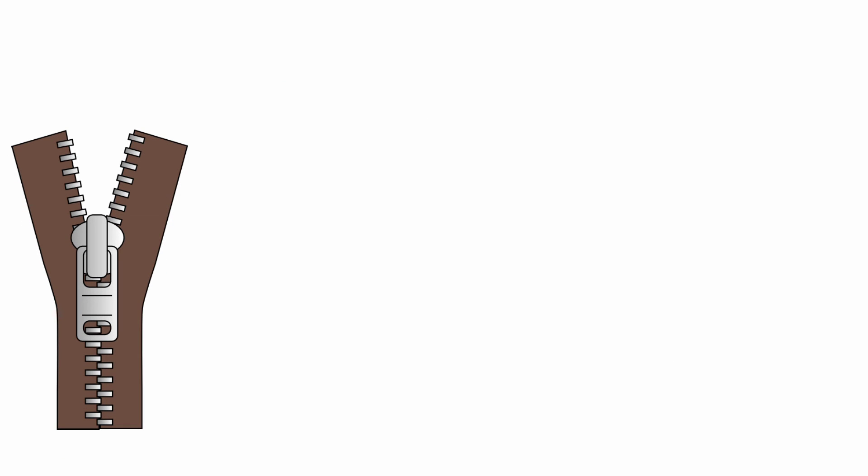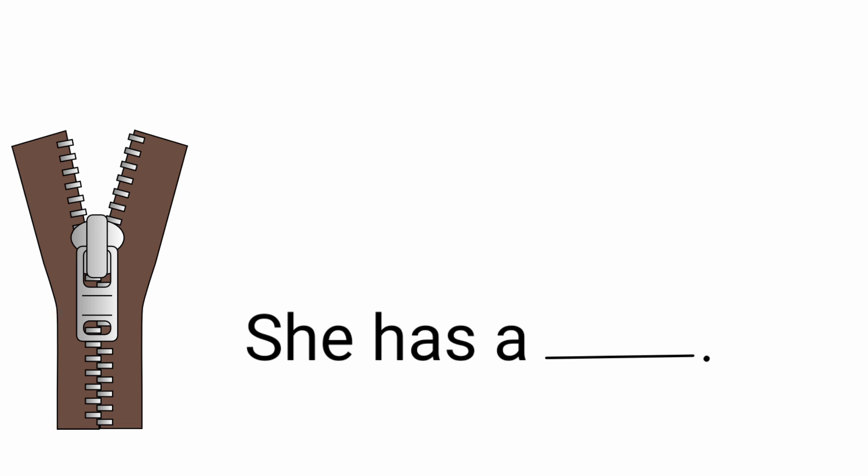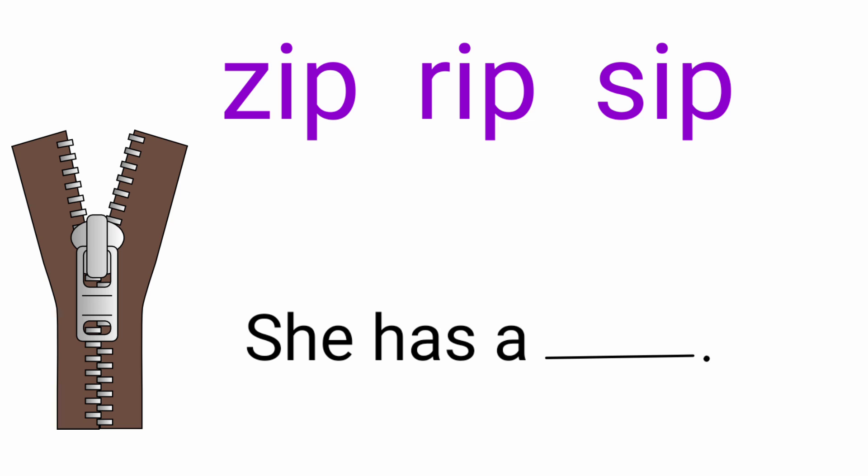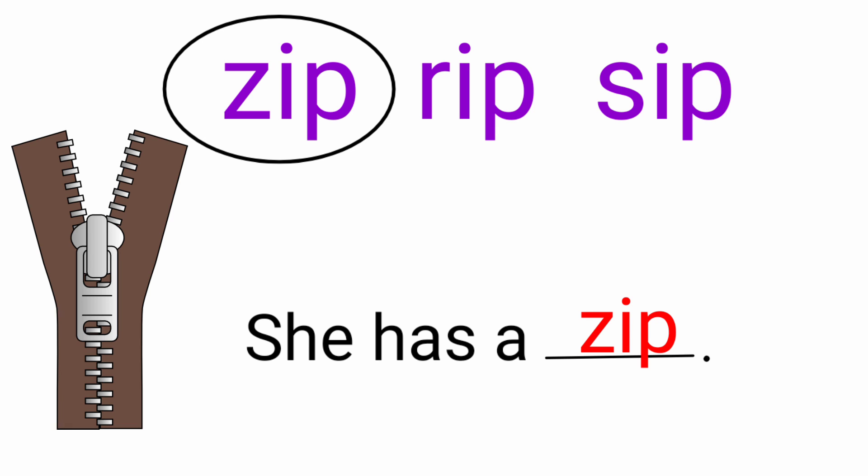Move to the next one — there is a zip. The incomplete sentence is: she has a dash. The given words are zip, rip, sip. Here we need to circle the word zip, and then write it to the sentence: she has a zip.